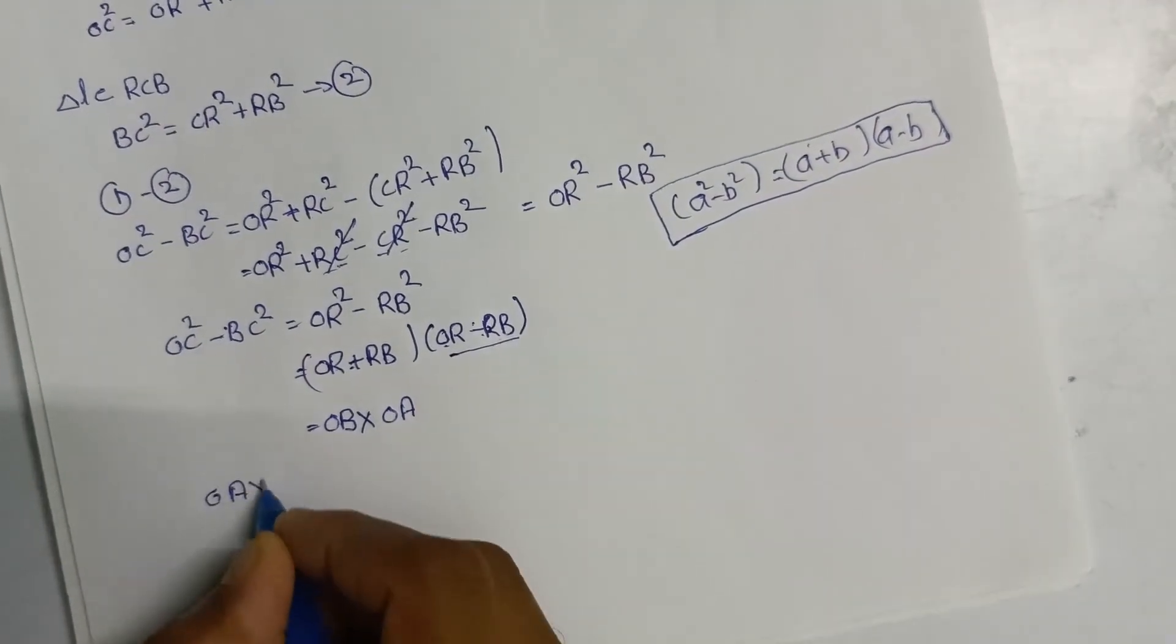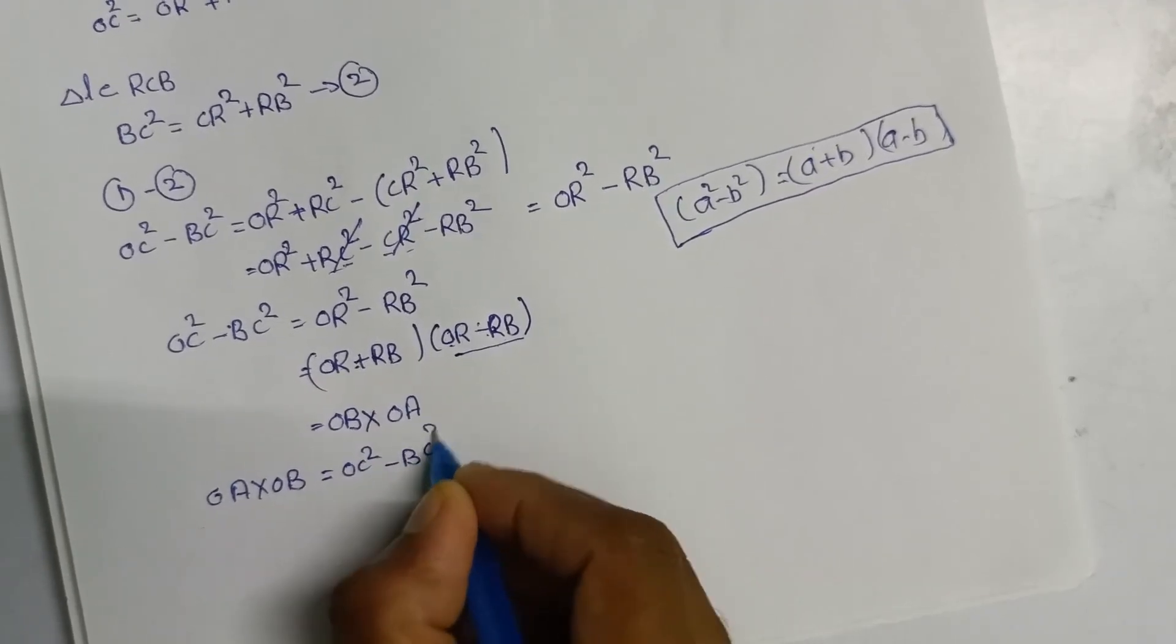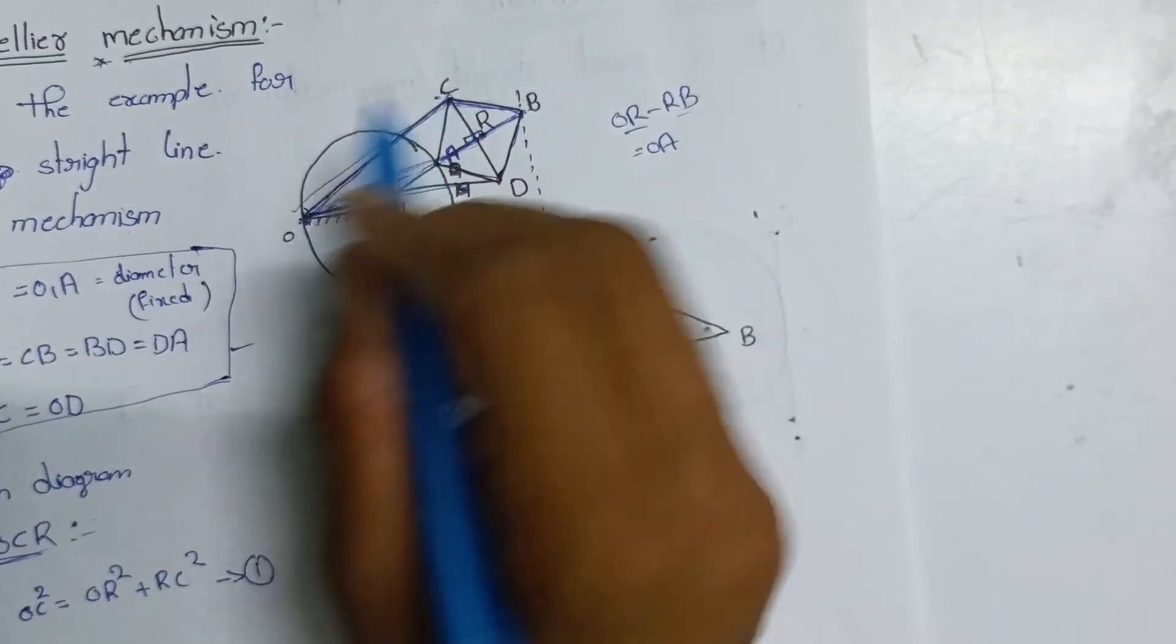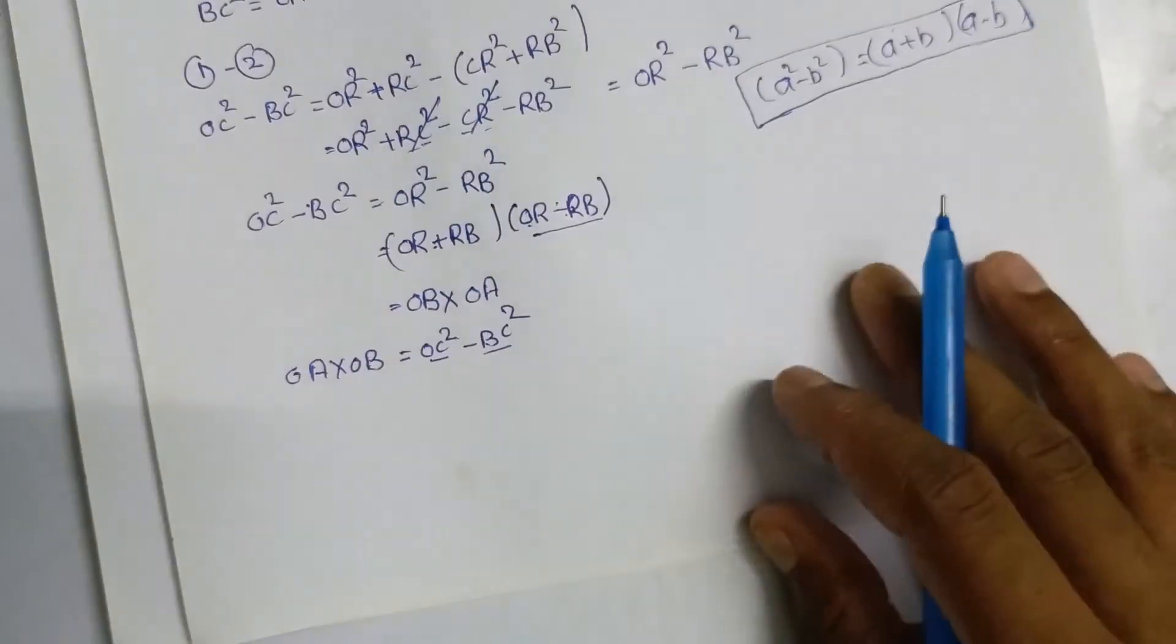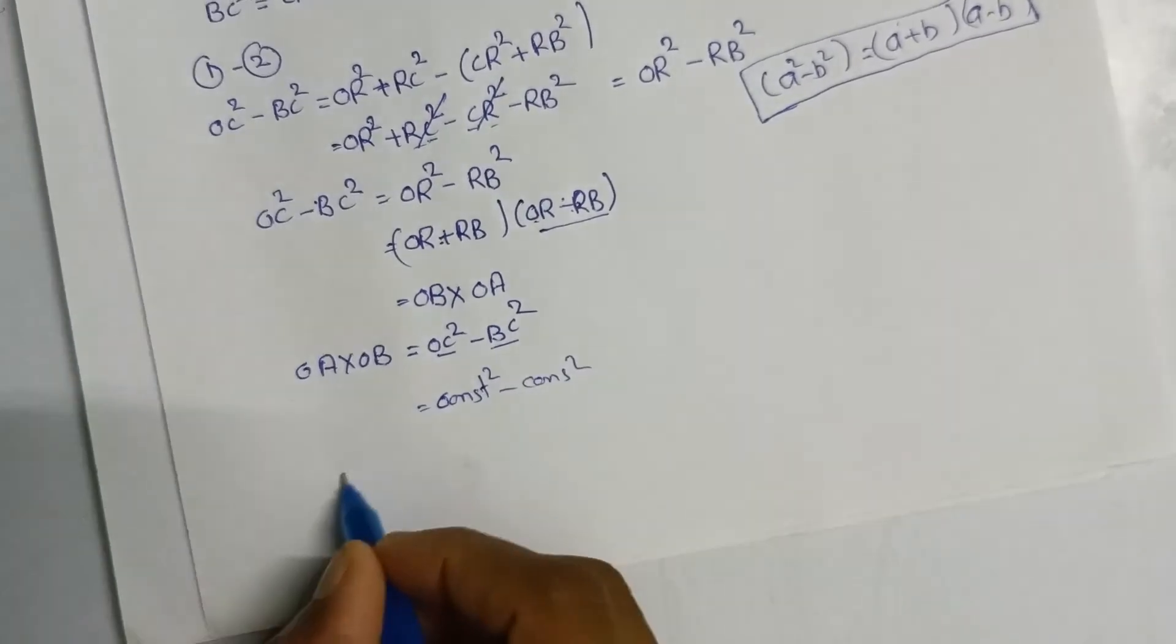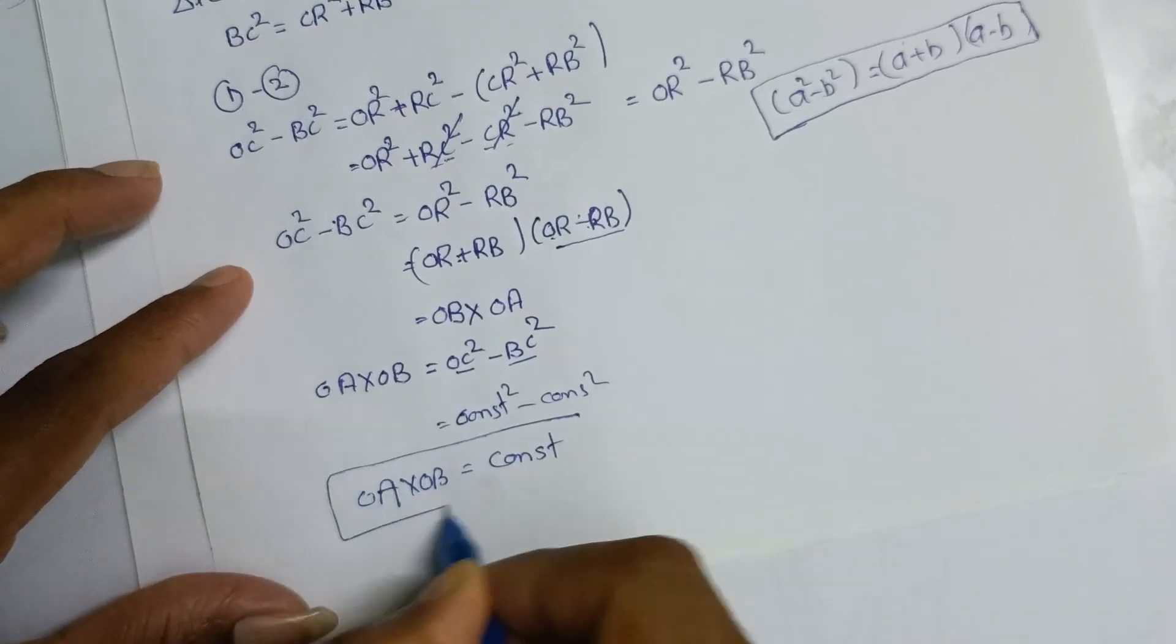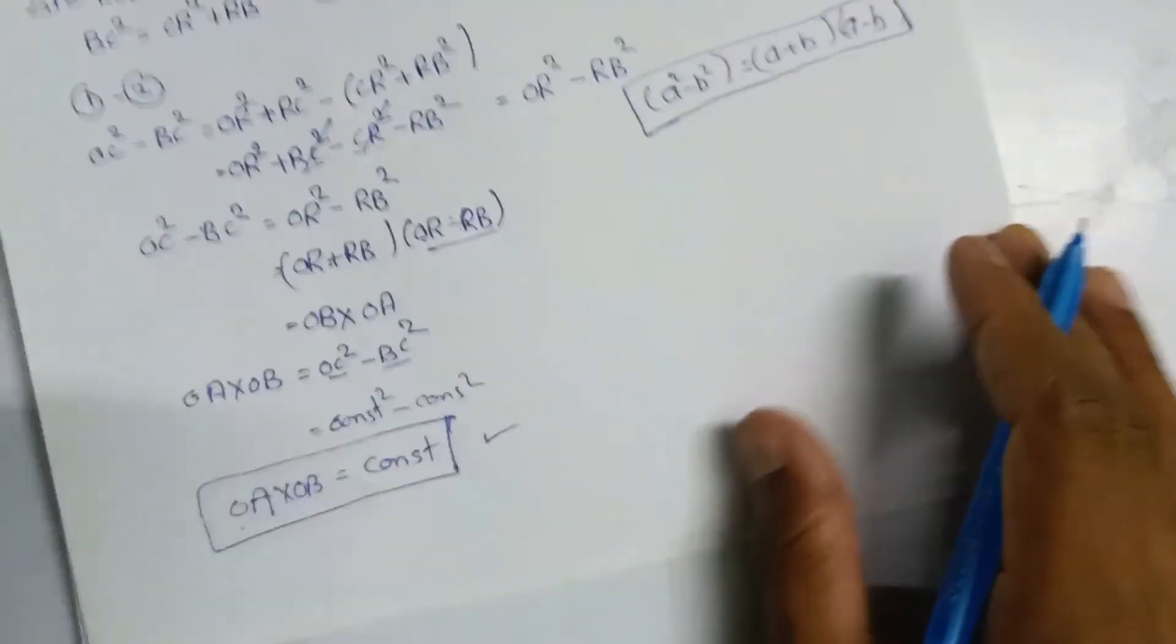OA into OB is equal to OC squared minus BC squared. OC and BC are equal to constant. The constant is equal to OC squared minus BC squared. OC squared minus constant squared equals OA into OB, which is constant. OA into OB equals constant, and this derivation proves the exact straight line motion.